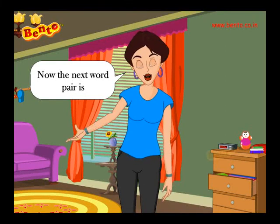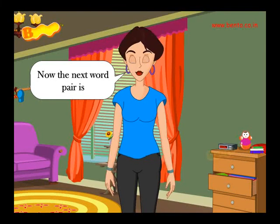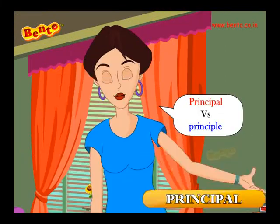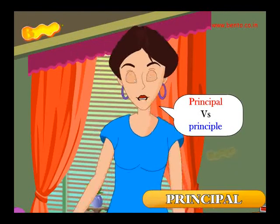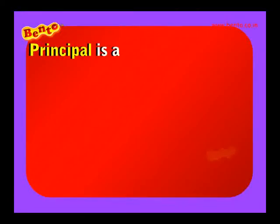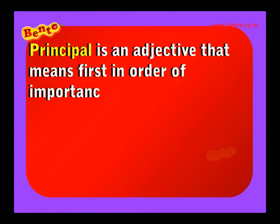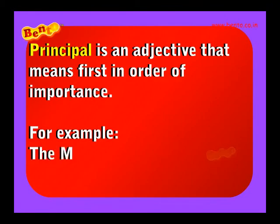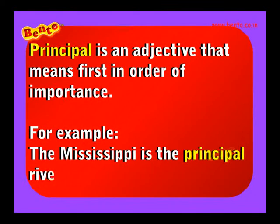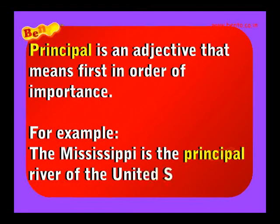The next word pair is principal and principal. Principal is an adjective that means first in order of importance. For example, the Mississippi is the principal river of the United States.